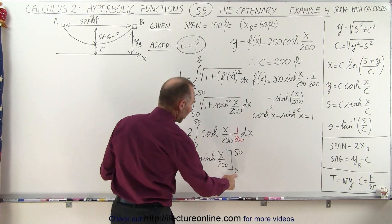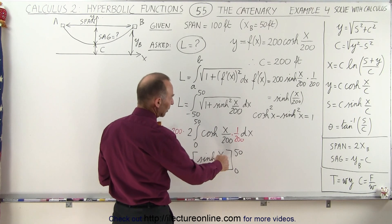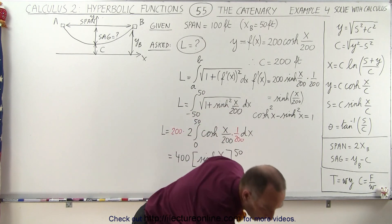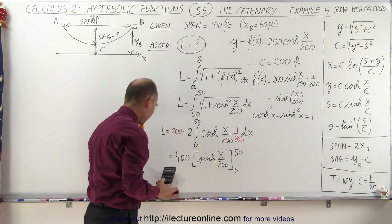Well, when we plug in the lower limit, the hyperbolic sine of 0, that would be 0. So we only need to worry about the hyperbolic sine of the higher number. And let's see here with a calculator.